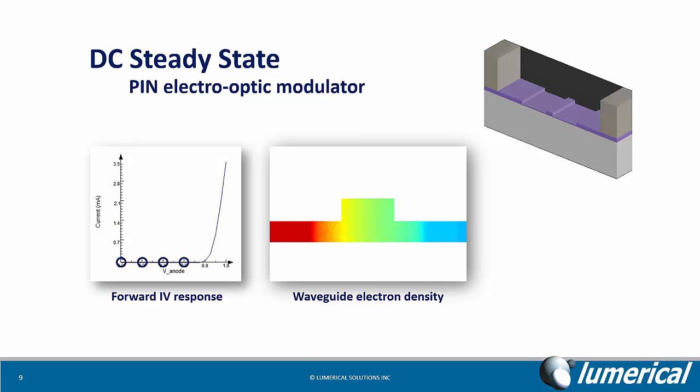As the bias increases, charge is injected into the waveguide region, changing the optical refractive index.